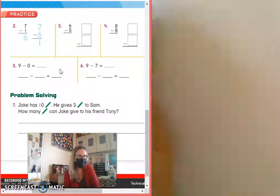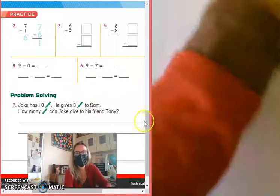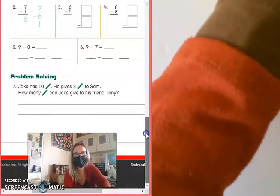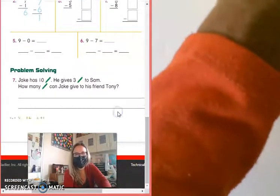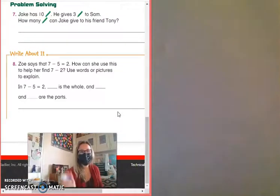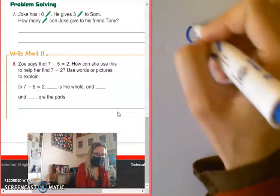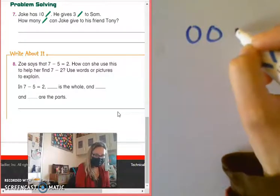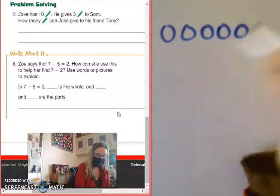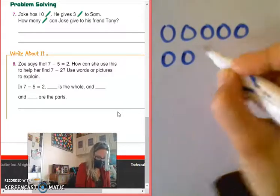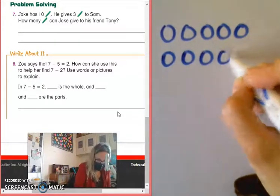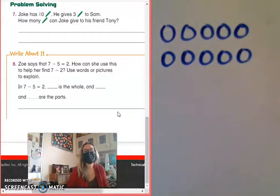Awesome. Let's take a look now at the word problem here. I'll move it to the top of the page so you can all see it. It says Jake has 10 crayons. Okay? So count with me. 1, 2, 3, 4, 5, 6, 7, 8, 9, 10. Beautiful.